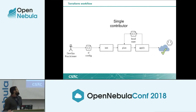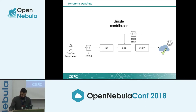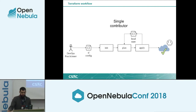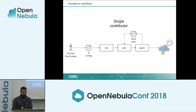This is the Terraform workflow. The DevOps creates the Terraform config file and then runs Terraform init to load the providers — in this case the OpenNebula provider. After that, Terraform plan is run, which shows which changes will be applied and saves the state so we know what to destroy if needed. Finally, Terraform apply deploys the infrastructure.